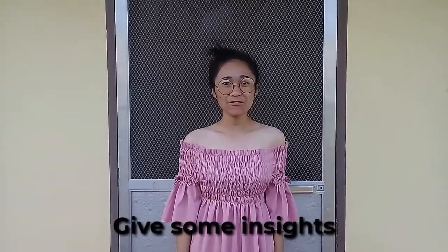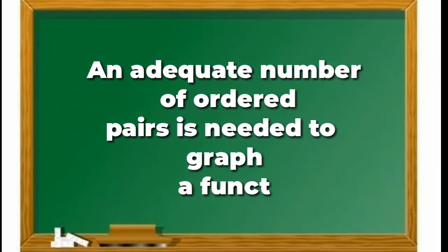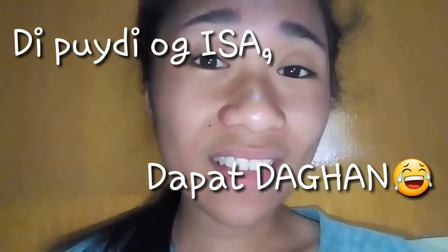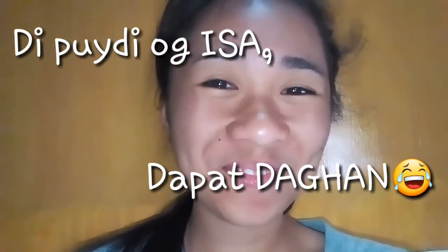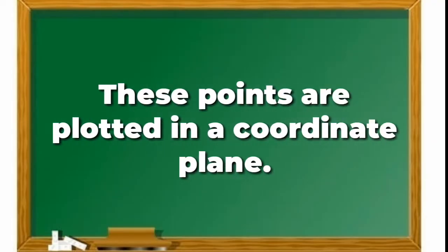Now that you know how to read the mathematical symbols, I'm going to give you some insights of our topic for today. An adequate number of ordered pairs is needed to graph a function. These points are plotted in a coordinate plane.